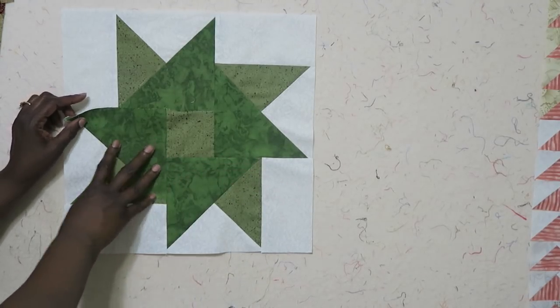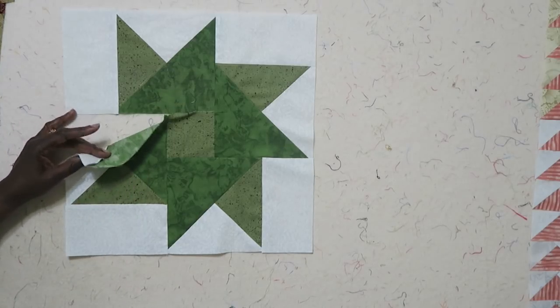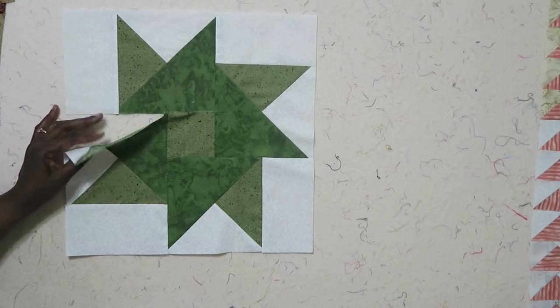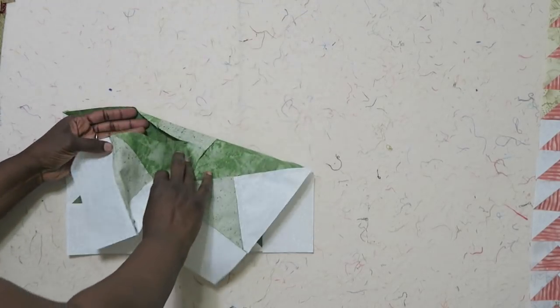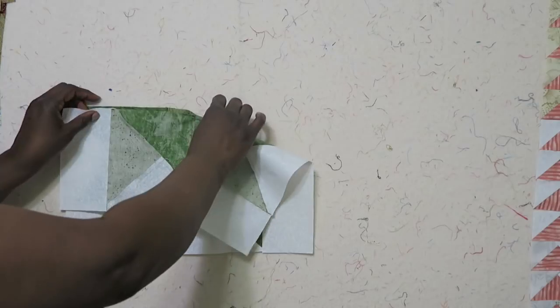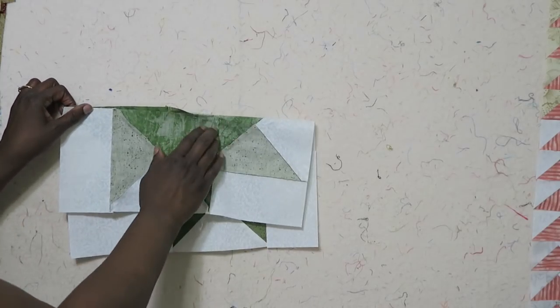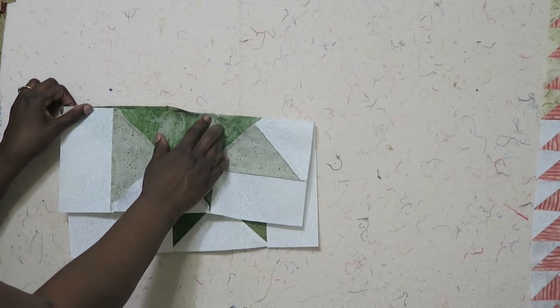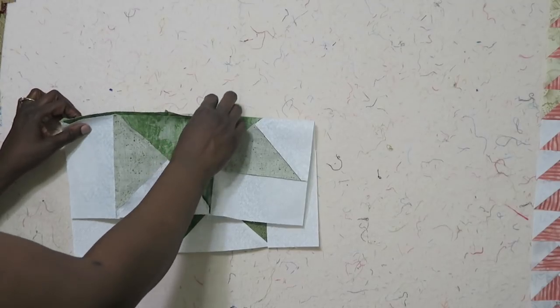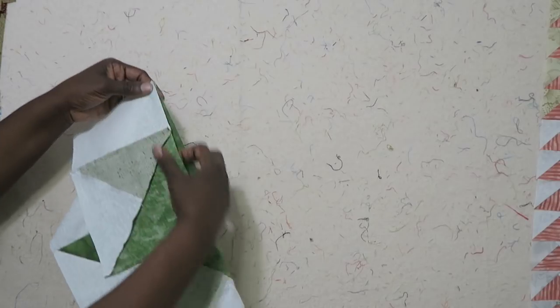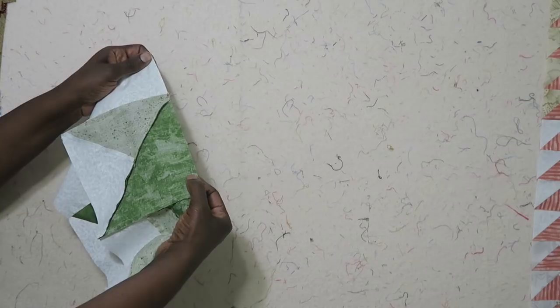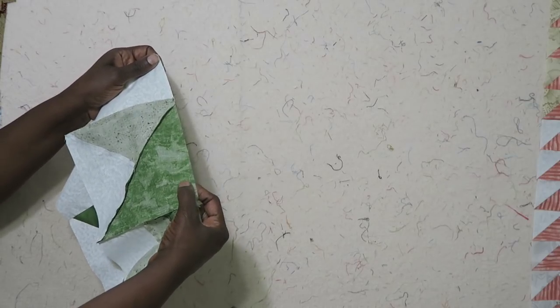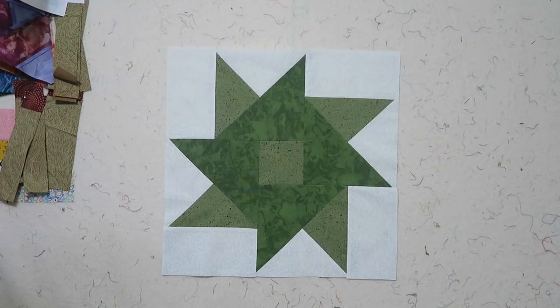Now I'm back and I have to finish my partial seam and it's really very simple. You just flip this down and you can see where I have my partial seam here already. I can either start at that point or I can start at the end and sew down to my partial seam and stop. So I'll go finish this block and come back.